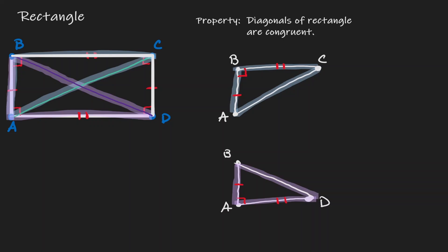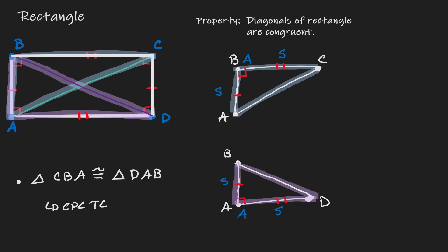Now let's think about what we know about these two triangles. Notice that these two triangles are congruent to each other. We have side, angle, and side — SAS. Therefore, triangle CBA is congruent to triangle DAB. And if that's the case, due to CPCTC, corresponding part AC is going to be congruent to corresponding part BD.